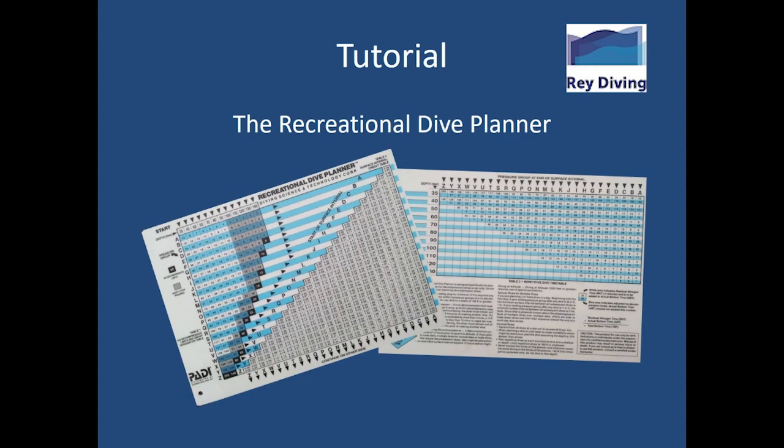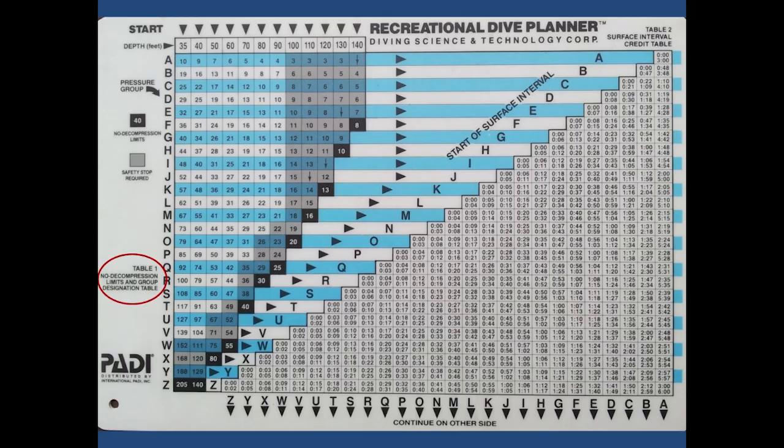I will start by showing you the parts of the dive table. Here we have table number one on the front, the No-decompression limits and group designation table.